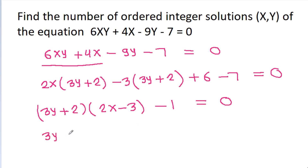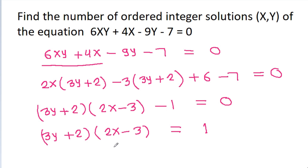So (3y + 2)(2x - 3) will be equal to 1. And we have given x and y are integers, so 3y + 2 and 2x - 3 will also be integers. And 1 as a product of two integers will be 1 times 1 and minus 1 times minus 1.